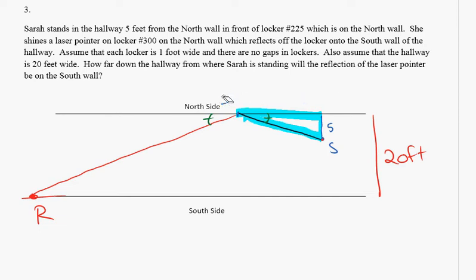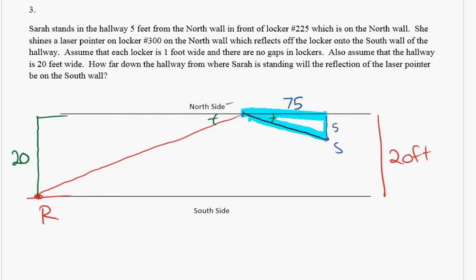75 lockers are in between, which is 75 feet. Now where's my other triangle? Well, it might be worth to draw a line perpendicular to the north wall because we know this length is 20 feet because the hallway is 20 feet wide.